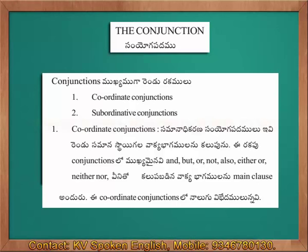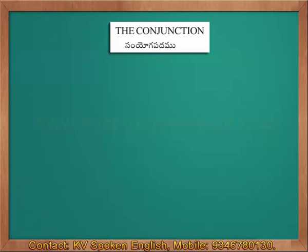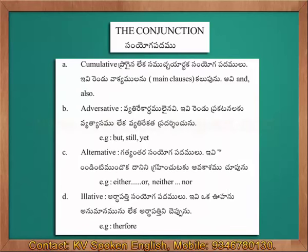Coordinated Conjunctions have four sub-types. First: Cumulative — these conjunctions add one statement to another. Examples: 'and,' 'also.' These are cumulative conjunctions.